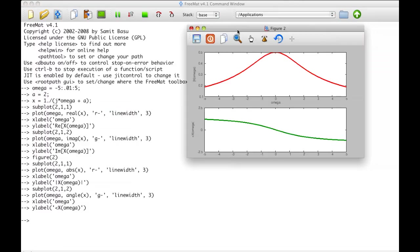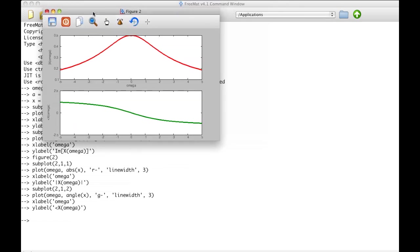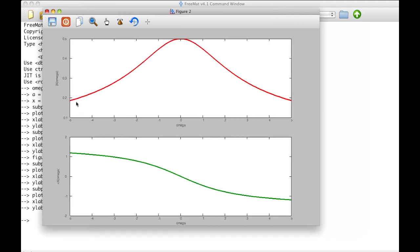So after getting all of the commands in to create the magnitude and phase plot, we have the following. This plot shows the magnitude. You can see that at zero, the magnitude goes up to 0.5, and then it tapers off as omega gets positive and tapers off as omega gets negative. The phase is zero for omega equals zero. It asymptotically approaches negative π/2 as omega gets large, and asymptotically approaches π/2 as omega goes large negative.